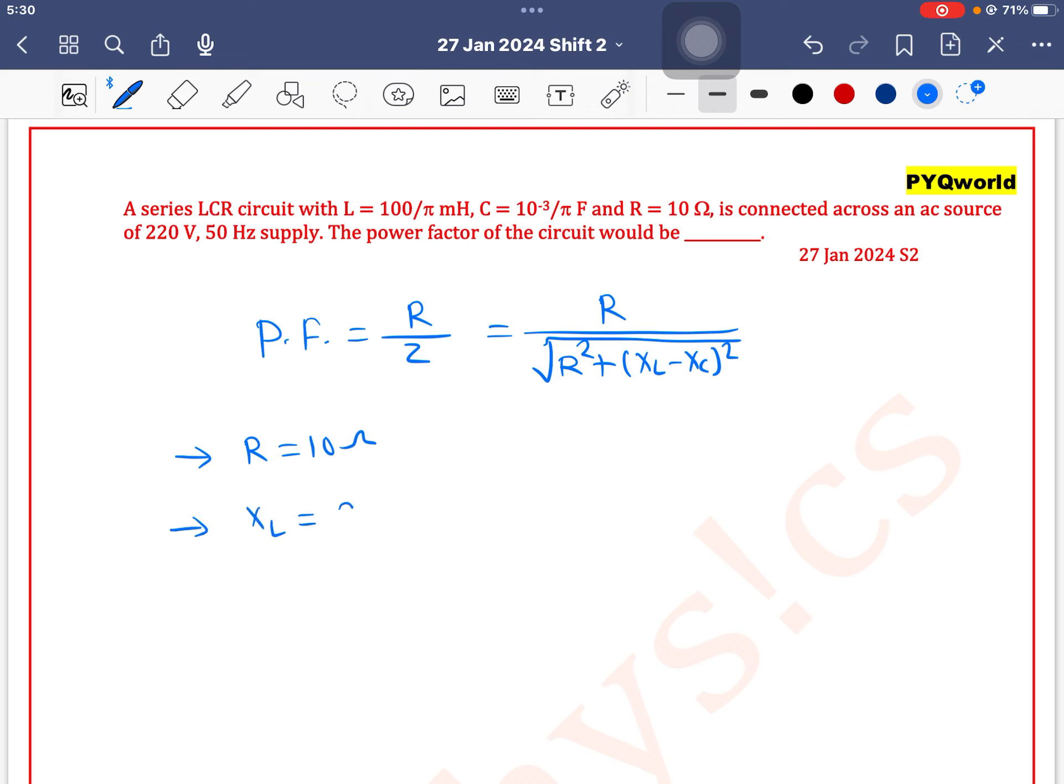So XL, formula for XL is 2 pi F into L. So 2 into pi into F, F is 50, into L, L is 100 by pi milli, it means 10 to the power minus 3. So this pi and this pi cancel out. 50 into 2 is 100, 100 into 100 is 10 to the power 4. 10 to the power 4 into 10 to the power minus 3 is 4 minus 3 which equals 10 ohm.